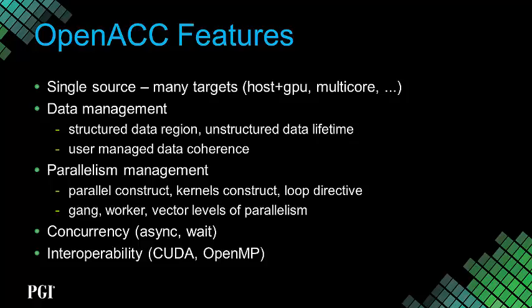OpenACC manages a couple of things. One is data movement — moving from the host memory space to the GPU memory space. Someone asked, are we always going to have these separate memories? The answer is yes. The GPU is a throughput-oriented device needing high-bandwidth memory, while the CPU is latency-oriented. The bandwidth-optimized memory is more expensive, meaning you can afford less of it, so they're always going to be separate.